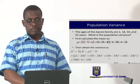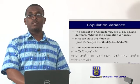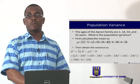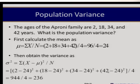To illustrate this, consider the ages of the Aperoni family: 2, 18, 34, and 42 years. We want to find the population variance. First, we calculate the mean: the sum of all x's is 2 plus 18 plus 34 plus 42, divided by 4, which gives us 24. Then we compute the squared deviations from the mean: (2−24)², (18−24)², (34−24)², and (42−24)². We sum all these and divide by n, which is 4, and it gives us 236.